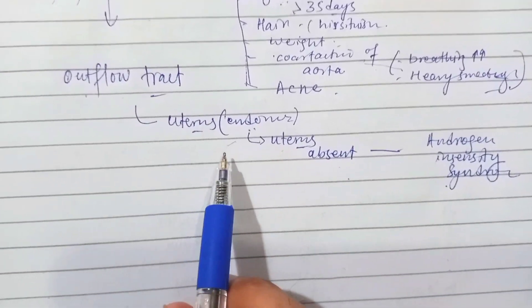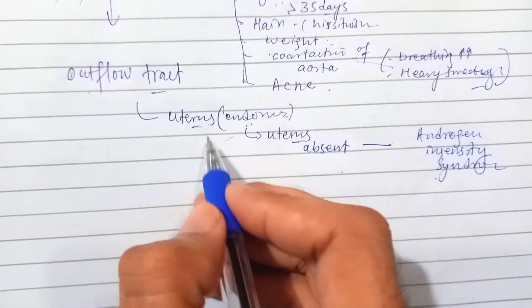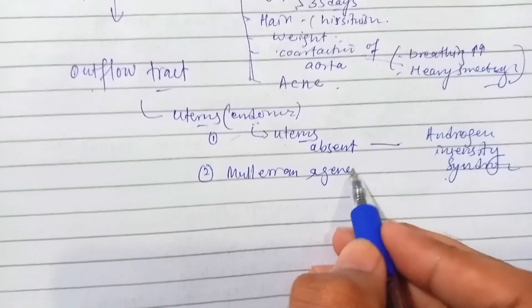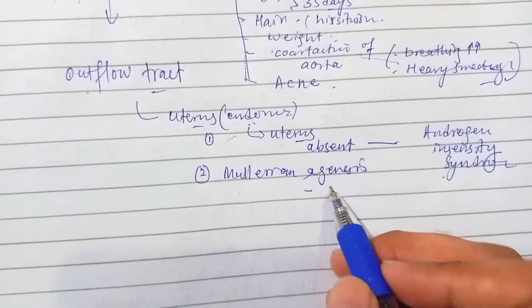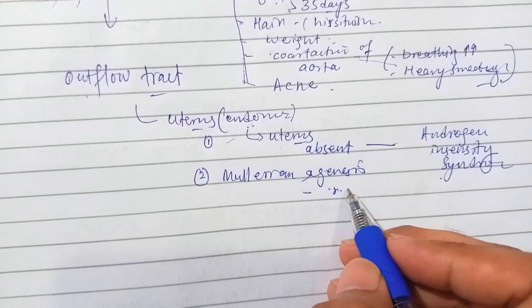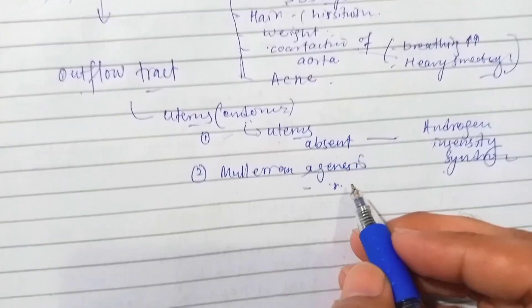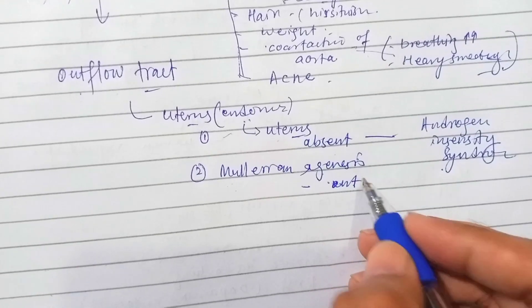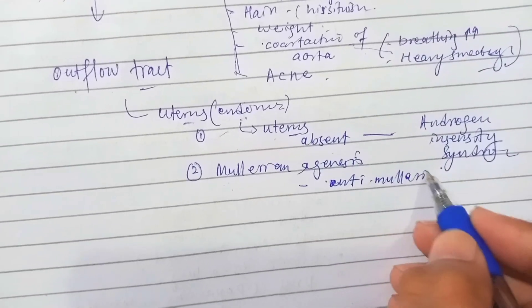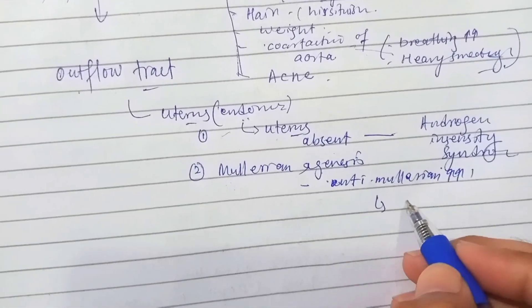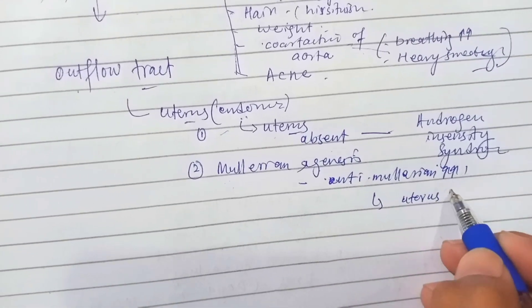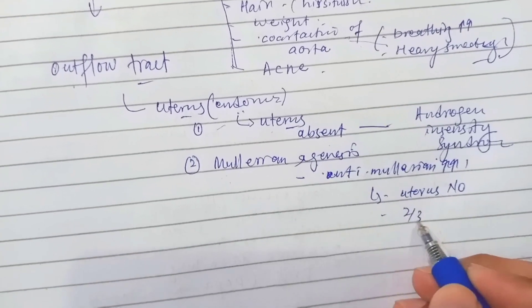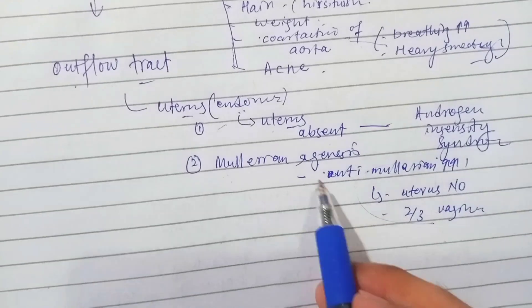Number second is: is there Müllerian agenesis? Müllerian agenesis describes that there is release of anti-Müllerian hormone during development. In case of Müllerian agenesis, the anti-Müllerian is released, and this affects the uterus to not be developed.